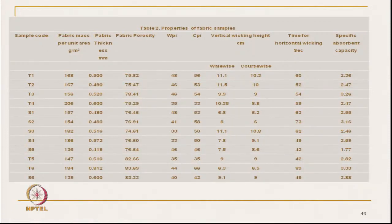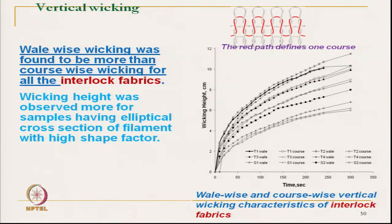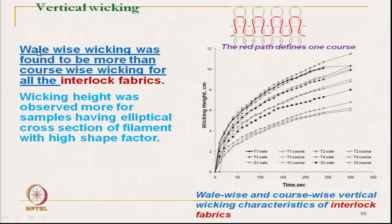We will discuss these characteristics in the form of graphs. Looking at vertical wicking in the case of interlock structure: this graph shows time versus wicking height for different fabrics in both course-wise direction (shown in red) and wale-wise direction. It has been observed that wale-wise wicking was found to be more than course-wise wicking of the interlock structure.